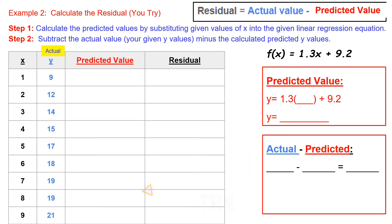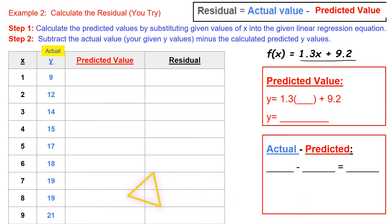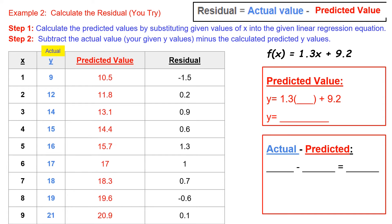For Example 2, calculate the residuals on your own for the function f(x) = 1.3x + 9.2. The steps are shown above. Go ahead and pause the video and try to calculate these residuals yourself. The answers are shown — pause the video and check your answers.